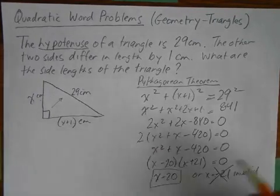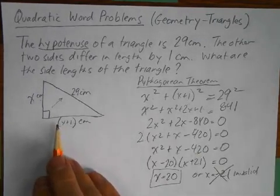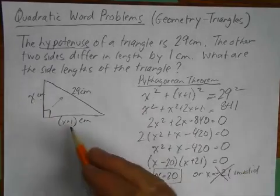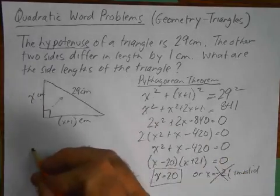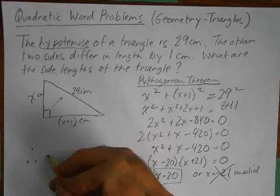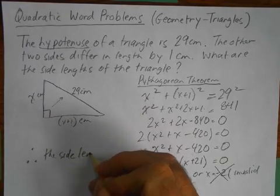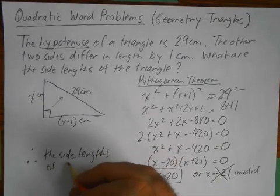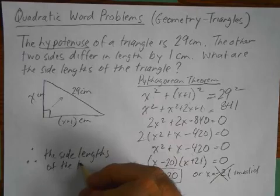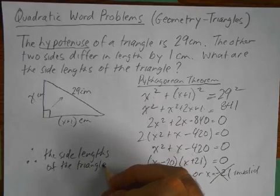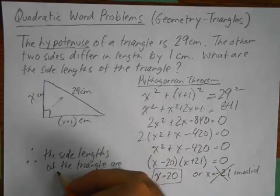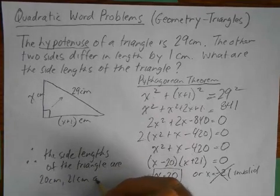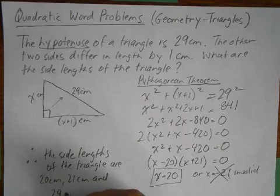So the only answer that works is X equals 20. And that's in centimeters. So if I go back to my drawing here, I know that that's going to be 20. I know that that's going to be 21. And that's 29. So therefore, the side lengths of the triangle are 20 centimeters, 21 centimeters, and 29 centimeters.